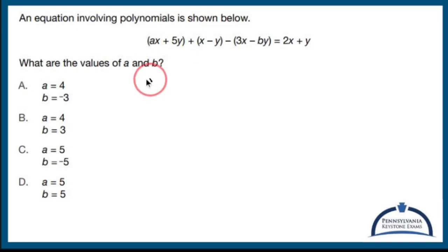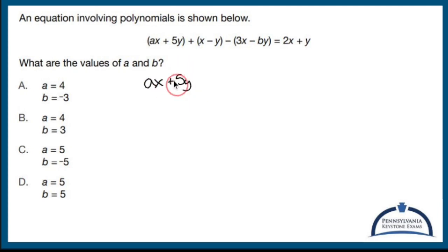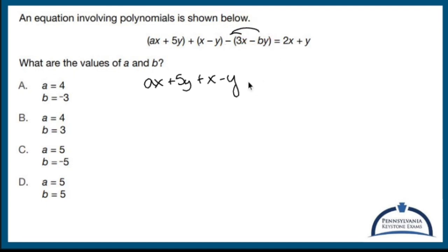Nothing is in front of these parentheses, so I don't need the parentheses. Similarly, since there's nothing in front of that parentheses, the parentheses don't matter. If there's just a plus sign in front of the parentheses, they also don't matter. But with this one, I need to distribute the negative, which means you flip every sign inside the parentheses.